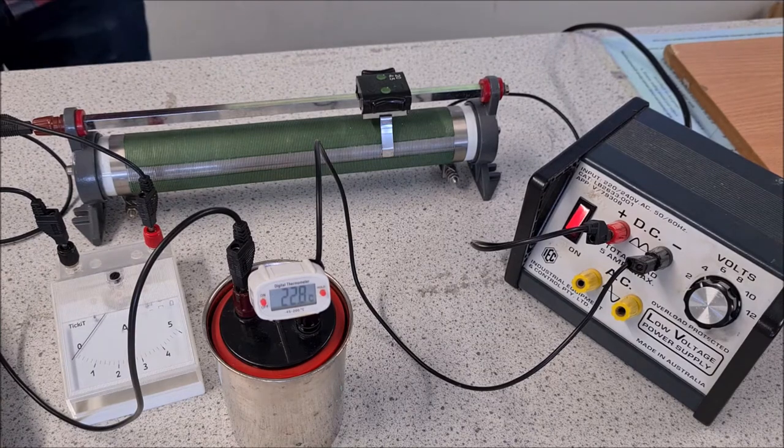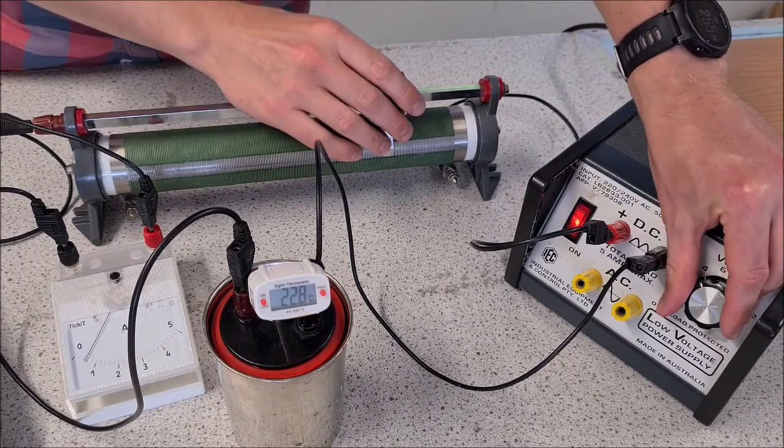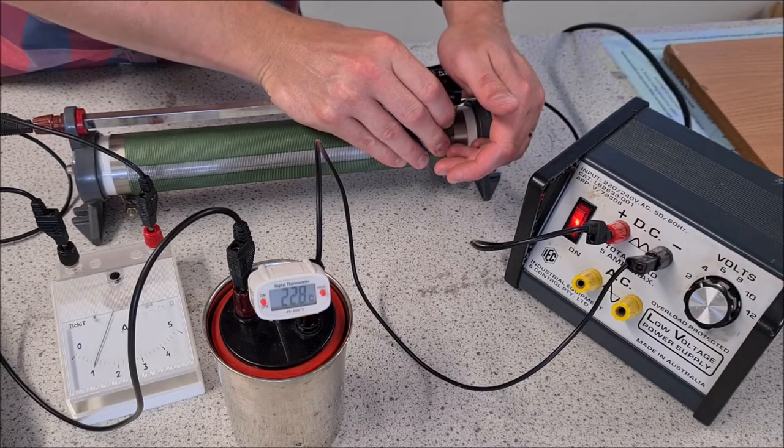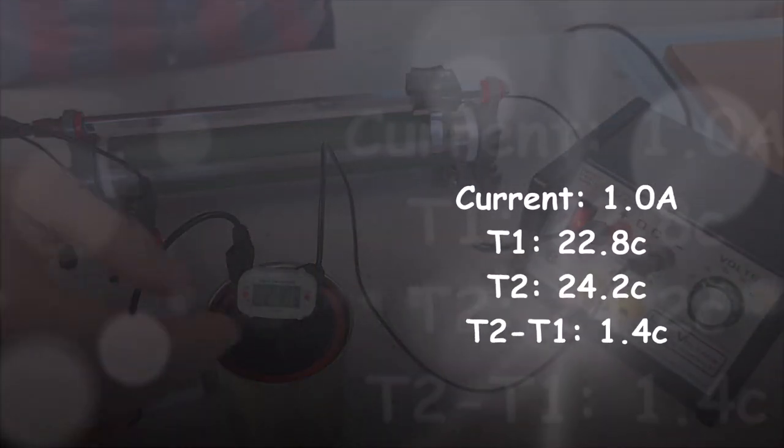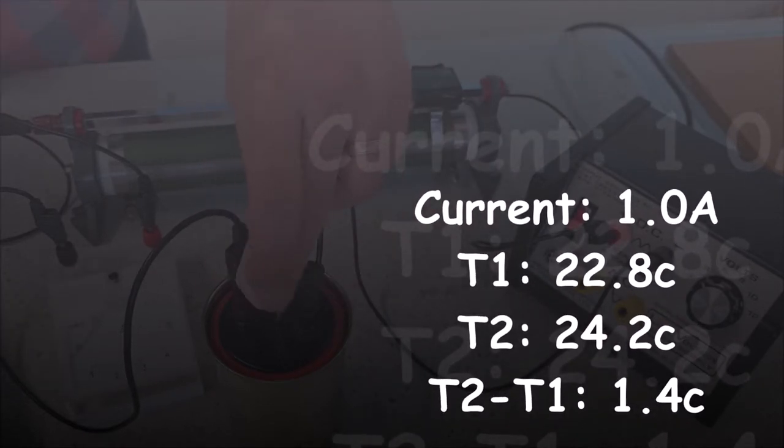So now we're going to turn on the power supply, and now we're aiming for one amp on the current. Okay, and we have one amp there, so we'll start the clock for five minutes. Alright, so coming up on five minutes there again. I'm going to turn off the power supply, and our final temperature is 24.2.